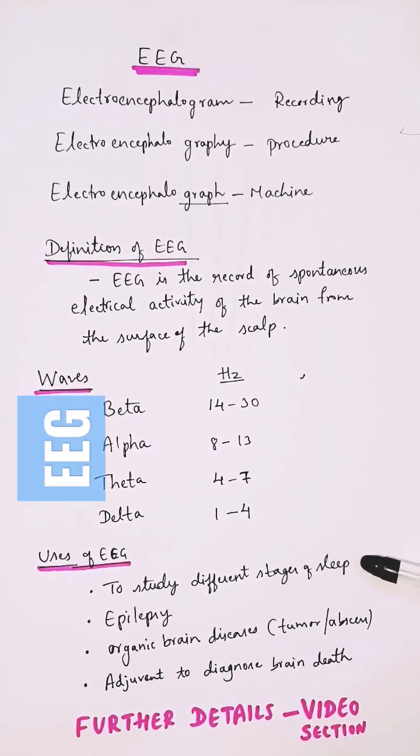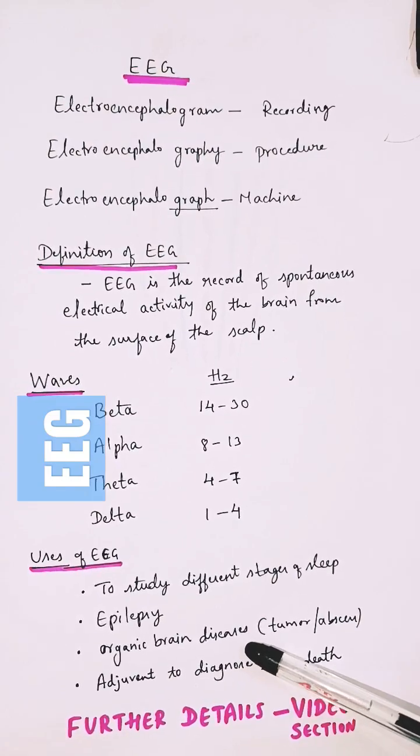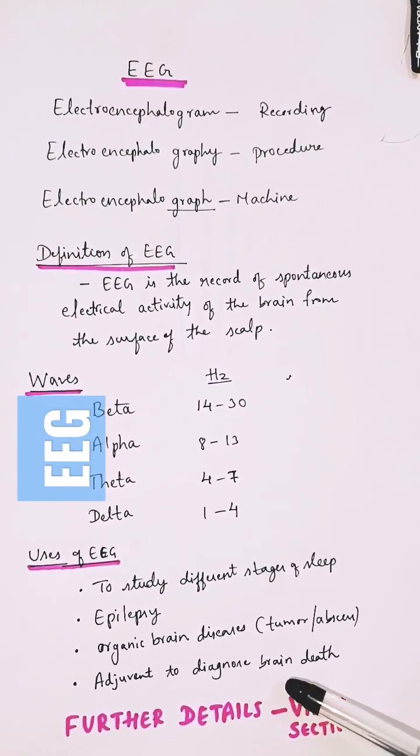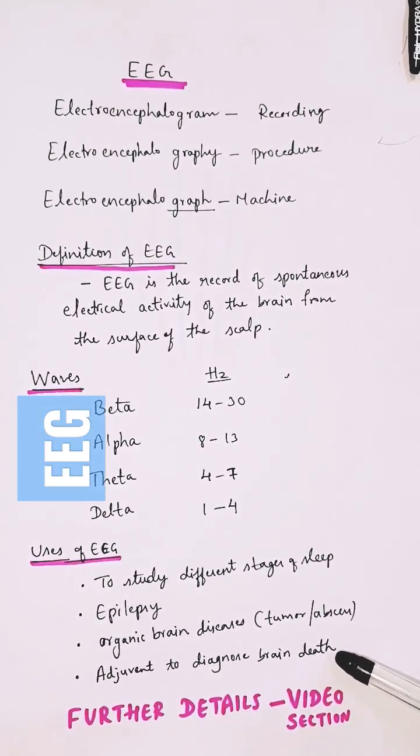Uses of EEG include studying different stages of sleep, differentiating types of epilepsy, and diagnosing organic brain diseases like tumors or abscesses. It can also be used as an adjuvant to diagnose brain death, though it's not recommended as a primary test these days.